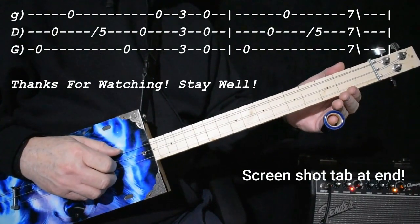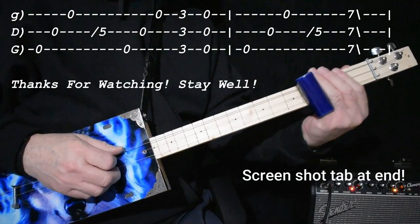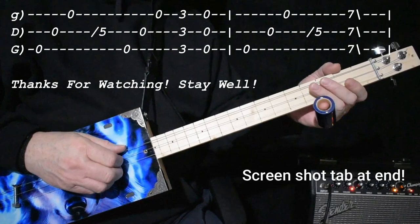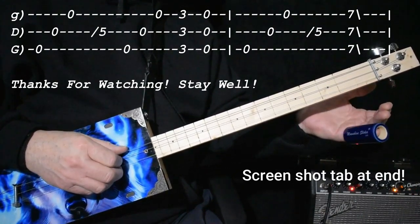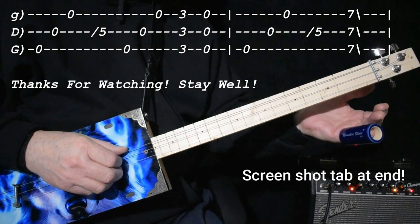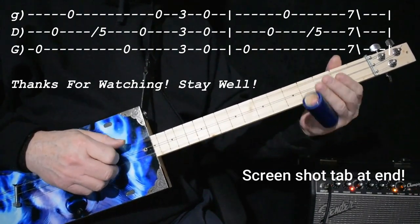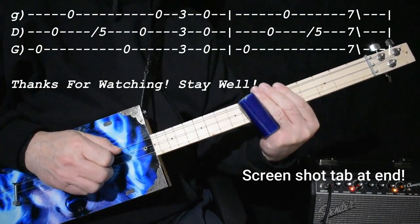So when you do the lick on the last time, which would be the turn around, you'd do it once normal. And then the next one. And then go to the five chord on seven. [Demonstrates] Just a little bit. Like that. All right, thank you.